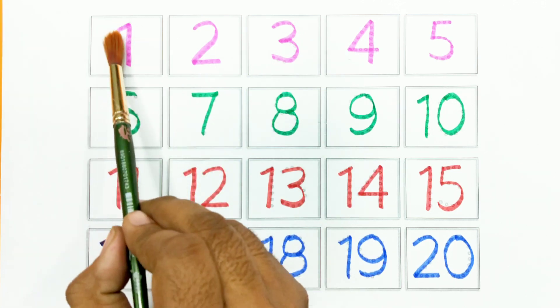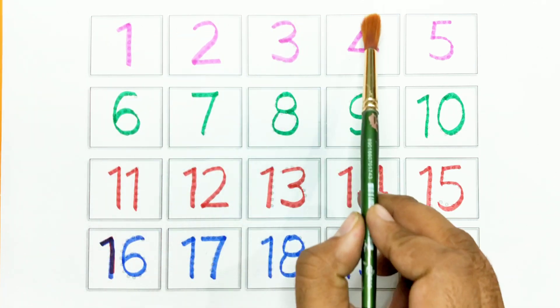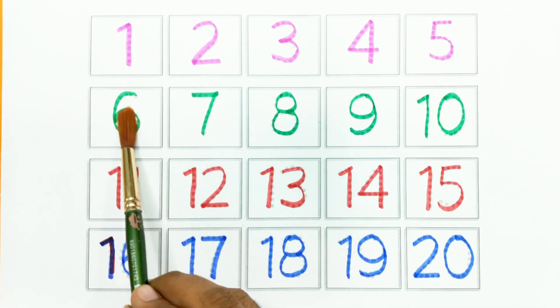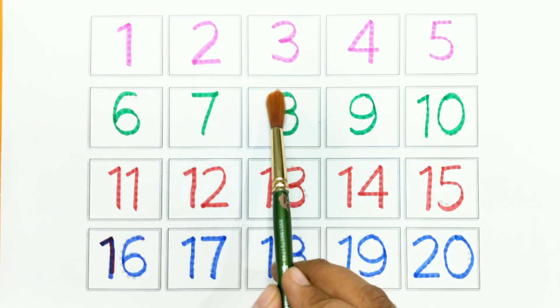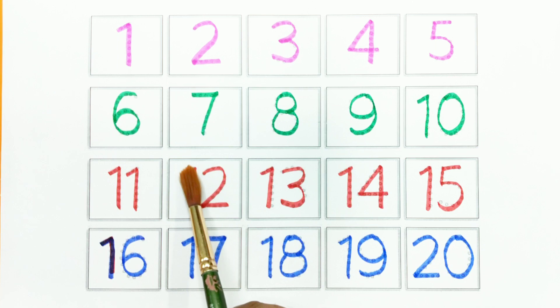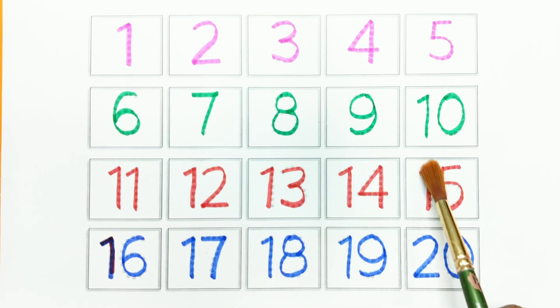1, 2, 3, 4, 5, 6, 7, 8, 9, 10, 11, 12, 13, 14, 15, 16, 17, 18, 19, 20.